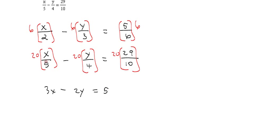For the second equation, 5 goes into 20 four times, so we've got 4x. 4 goes into 20 five times, so we've got minus 5y is equal to 10 goes into 20 two times, so I've got 2 times 29, which would be 58.